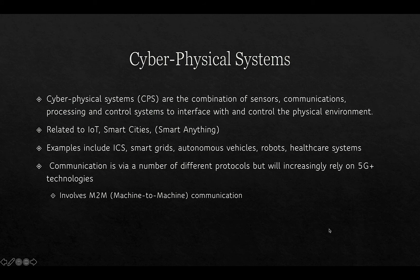Cyber-physical systems, or CPS, are combinations of sensors, communications, process control, and systems to interface with and control the physical environment. They are related to technologies like IoT (Internet of Things), smart cities, and smart anything. Examples include industrial control systems (ICS), smart grids for controlling power, autonomous vehicles, robots, and healthcare systems. Communication is via a number of different protocols, but will increasingly rely on 5G-plus technologies and involve machine-to-machine (M2M) communication.